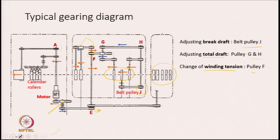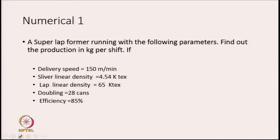This is a typical machine. The construction of the machine is simple and the drive diagram is also simple — there is not too much complexity in it. We have textile machines where the drive is much more complex in nature. Now we will discuss one or two numericals. Here is a numerical.